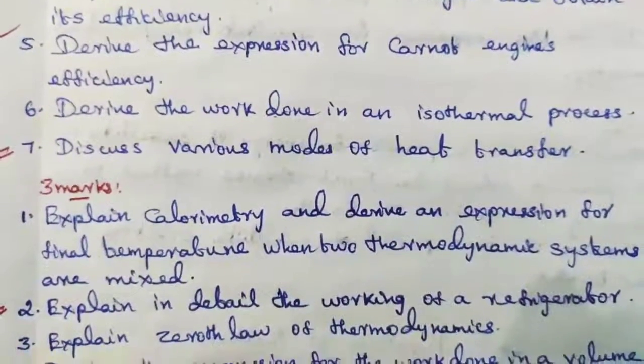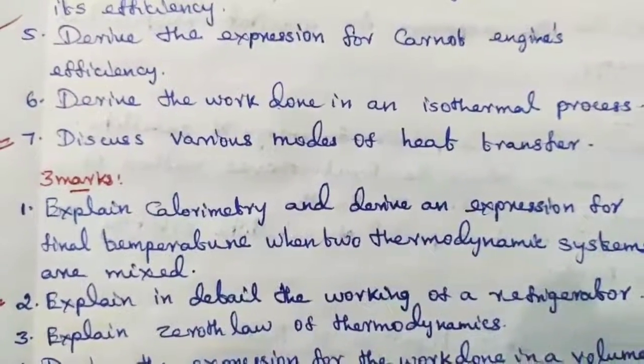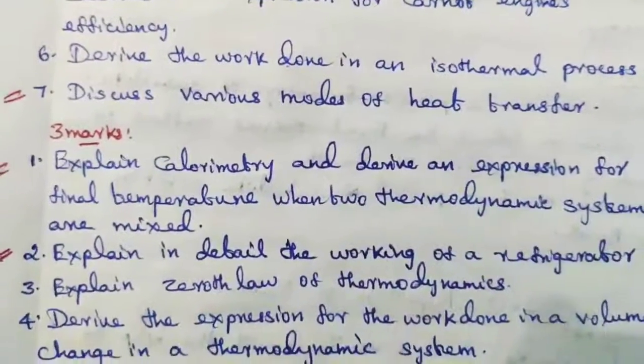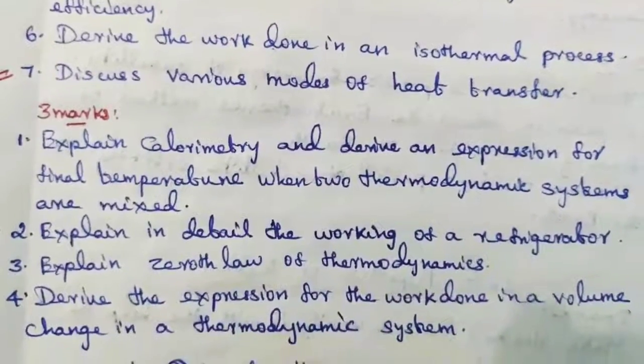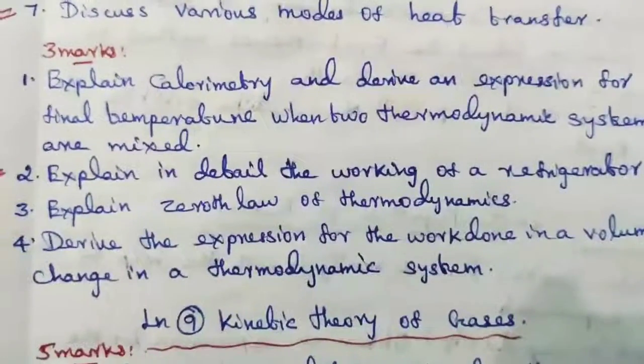Explain calorimetry and derive an expression for final temperature when two thermodynamic systems are mixed. Explain in detail the working of a refrigerator. Explain zeroth law of thermodynamics. Derive the expression for the work done in a volume change in a thermodynamic system.